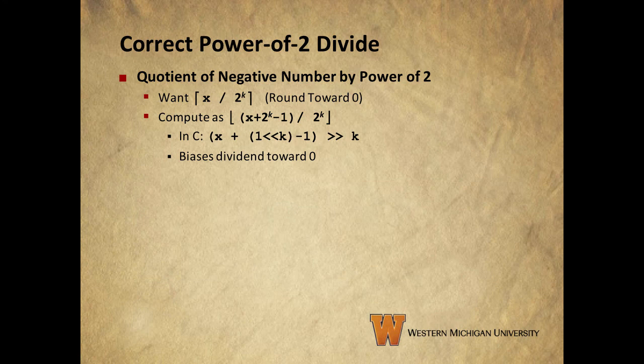We can fix this by adding a bias to our integer. We add 2 to the k minus 1 to our integer x, which has the effect of adding 1 to the final result of an operation if x is negative. The bias of 2 to the k minus 1 ends up looking like a mask of length k that contains all ones.